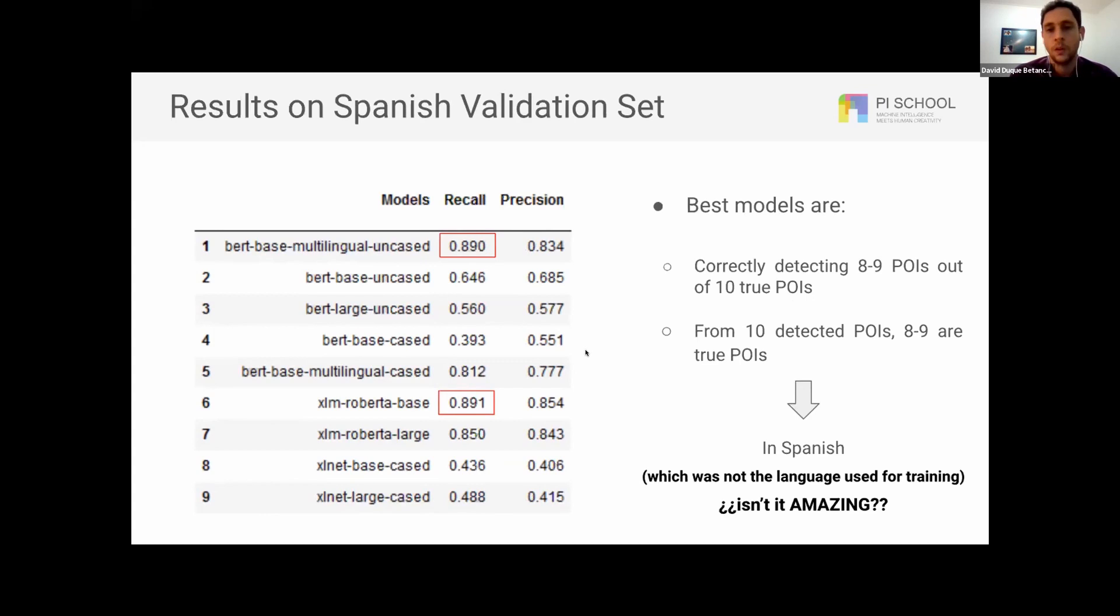So what we are getting is a kind of transfer learning between languages, because we were training in English, and we can actually use the same model to detect point of interest in Spanish, and it will be true for multiple languages. Isn't it amazing?